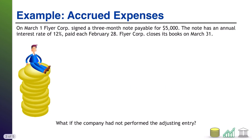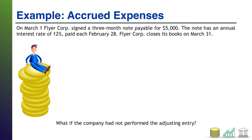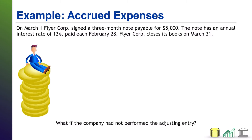Let's see an example. On March 1st, FlyerCore signed a three-month note payable for $5,000. The note has an annual interest rate of 12%, paid each February 28th. FlyerCore closes its books on March 31st. In this case, there is something that kicks off the need for an adjusting entry — the company borrowed money on March 1st. But the borrowing itself isn't what we adjust; what we have to adjust is how much interest do we owe on this money after one month.